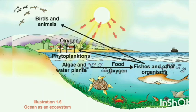About 70 to 80% of the oxygen present in the atmosphere is contributed by algae and phytoplanktons present in the sea.